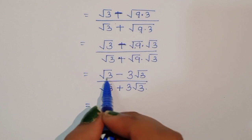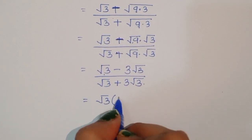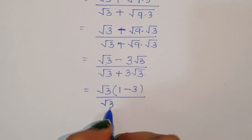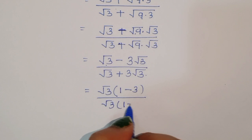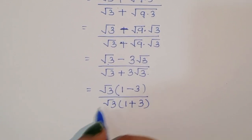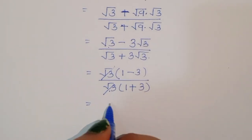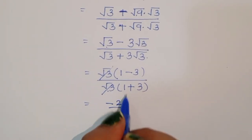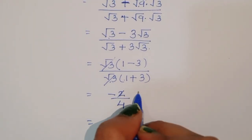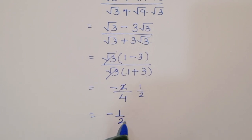We can take square root of 3 as a common factor. This gives square root of 3 times (1 minus 3), divided by square root of 3 times (1 plus 3). The square root of 3 cancels, leaving (1 minus 3) over (1 plus 3), which is negative 2 over 4.